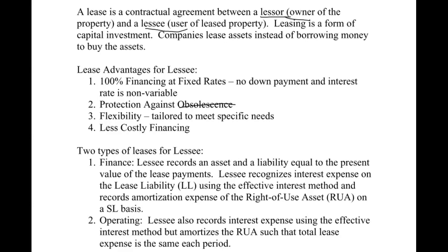There are two main types of leases: finance and operating. This chapter is typically one of the harder chapters because there are two different types of leases to look at, and we're looking at it from both the lessee standpoint and the lessor standpoint. We'll also be adding in things like residual values. There's a lot to keep straight, so you really have to pay attention and keep up.